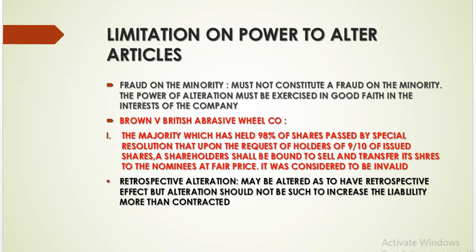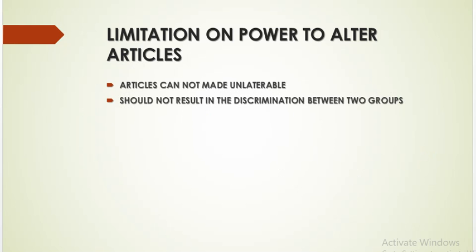Retrospective alteration means an alteration which is effective from a backdated date. The alteration of the article may be made so as to have retrospective effect, but the alteration should not be such as to increase the liability beyond what was contracted. The article cannot be made unalterable — meaning there cannot be any provision which says the article cannot be changed or modified. The alteration should not be done in such a manner that it results in discrimination between two groups.